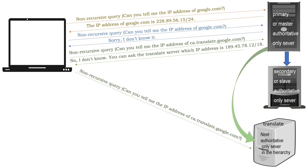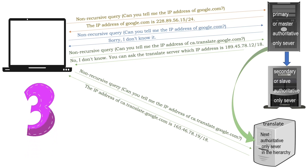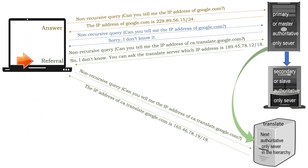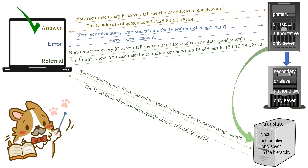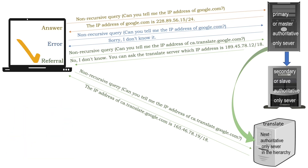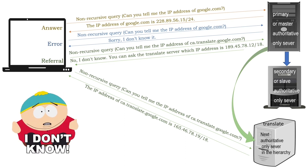The requester can contact referred servers to resolve the query. A requester can receive three types of responses from an authoritative DNS server: the answer to the query, a referral to the next DNS servers, or an error. If the authoritative DNS server has the requested information in its zone files, it receives the answer. If it does not have the information but has addresses of the next authoritative servers in the referral list, it receives that referral list. If it has neither, it receives a requested-information-not-found error.